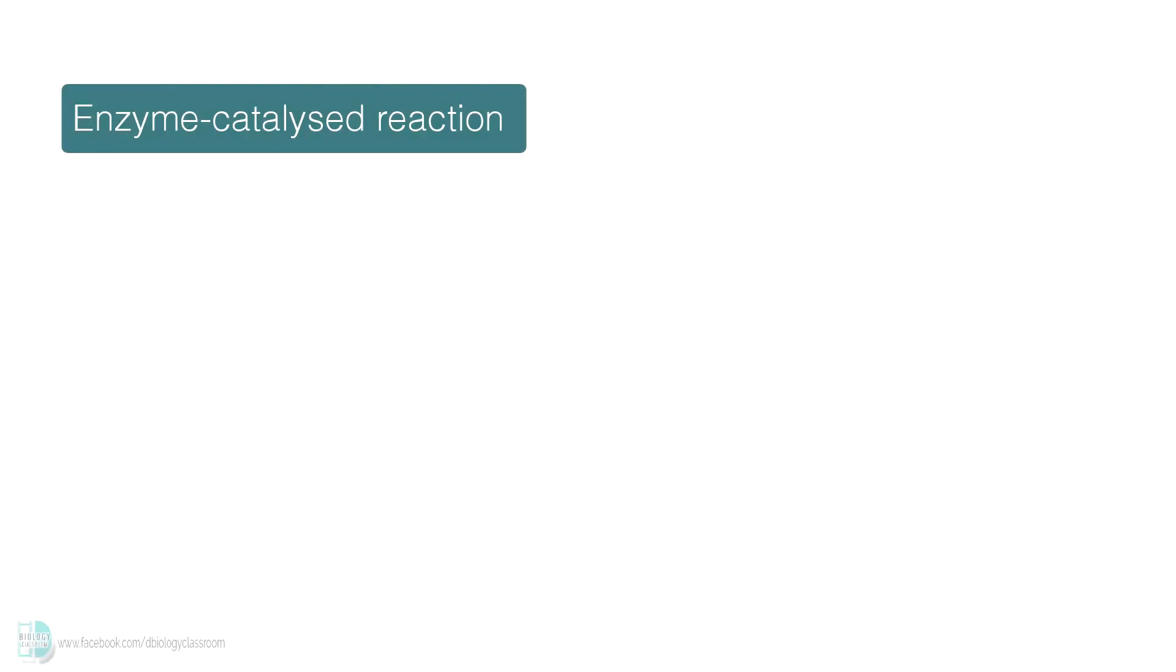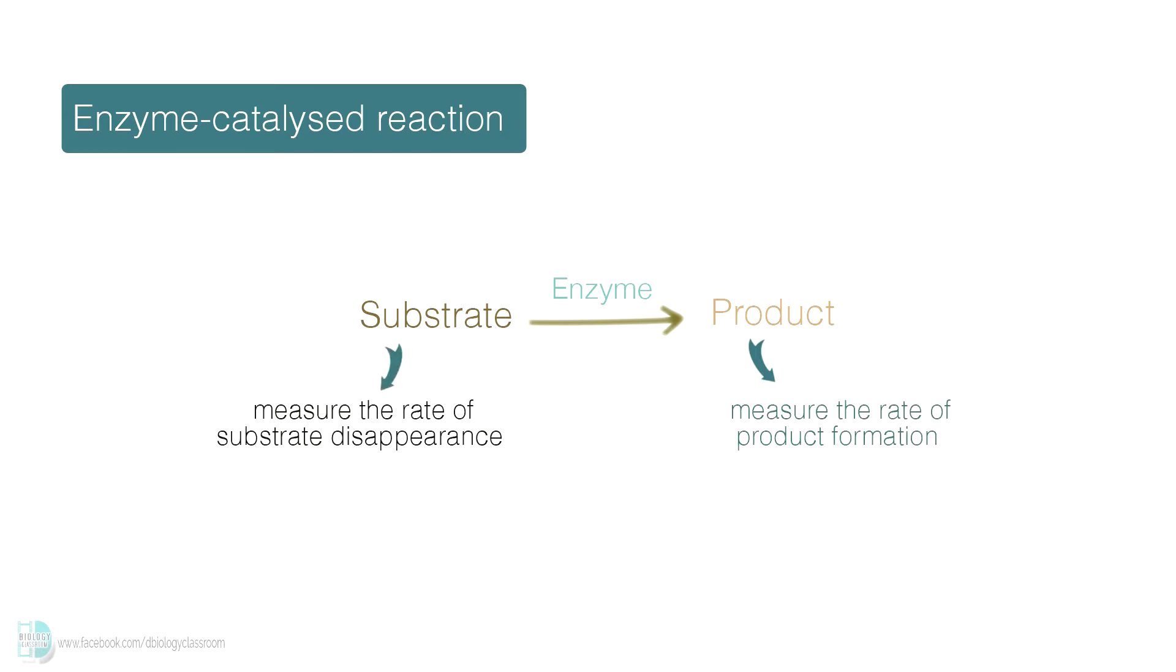In an enzyme catalase reaction, an enzyme will cause the change of substrate into product. There are two ways to investigate the progress of the reaction. Firstly, one can measure the rate of formation of the product. Secondly, it can be done by measuring the rate of disappearance of the substrate. We will use one example to understand each of the methods.